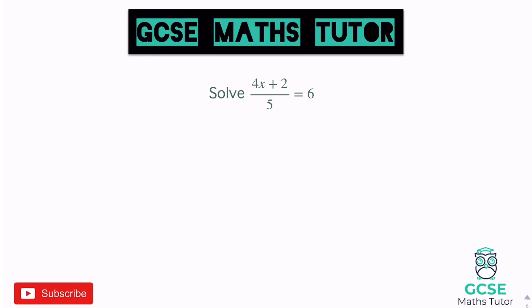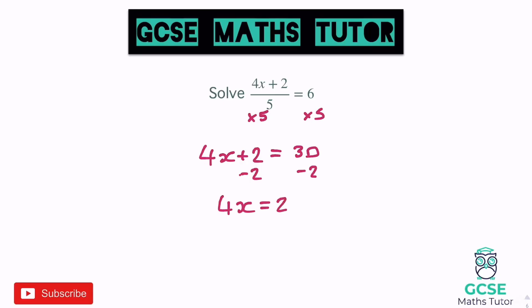Everything is locked in by the denominator 5, so first we multiply both sides by 5. That removes the divide, leaving 4x plus 2 equals 6 times 5, which is 30. Now it looks like before: subtract 2 from both sides to get 4x equals 28, then divide by 4 to get x equals 7. That's our final answer.